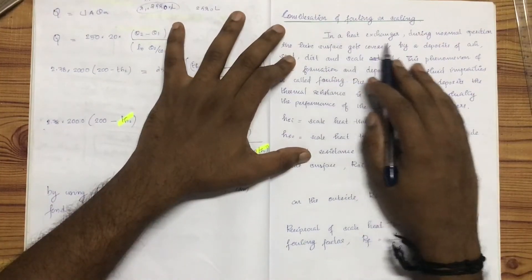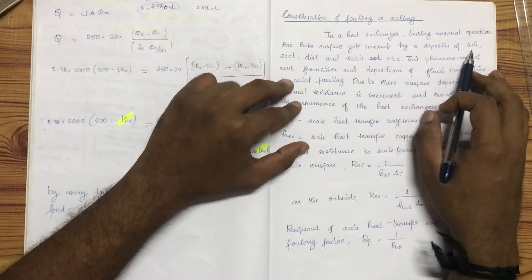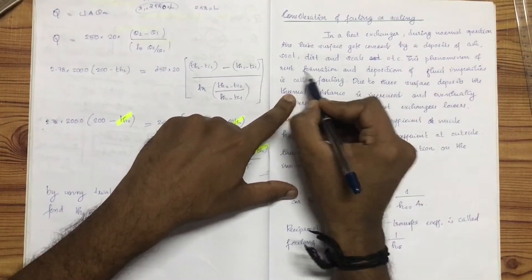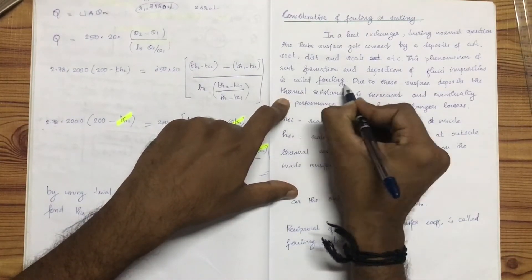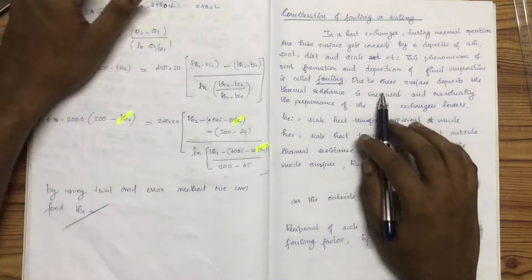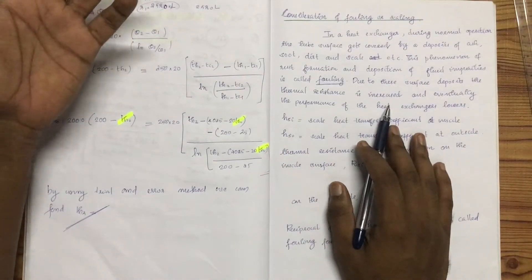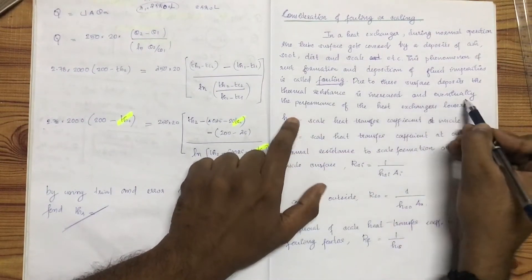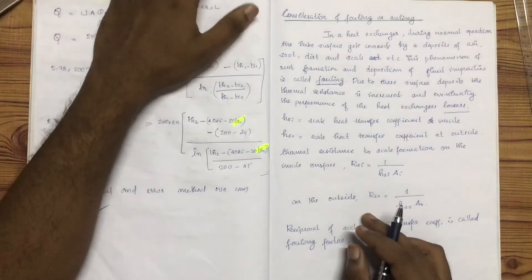When the heat exchanger is used, the tube surface gets covered by a deposit of ash, soot, dirt, scale, etc. This phenomenon of rusty formation and deposition of fluid impurities is called fouling. Due to these surface deposits, the thermal resistance is increased and eventually the performance of heat exchangers lowers. Fouling lowers the performance of heat exchangers.